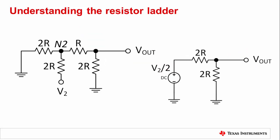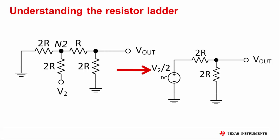Next we will look at the contribution for V2. Again we know that looking backwards into the ladder will show a resistance of 2R, so we can immediately redraw the circuit to include this. Now we will create a cut line where we will add the Thevenin equivalent circuit, which is a voltage source of V over 2 and a resistor of R. This R gets combined with the R now in series in the ladder to give a new circuit. Again we see the simple resistor divider at Vout, and the contribution of the second arm to the output voltage is V2 over 4.